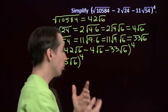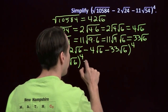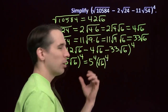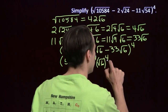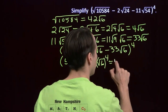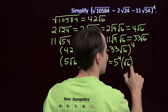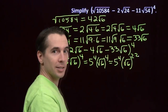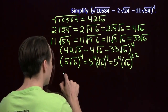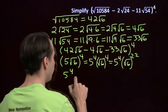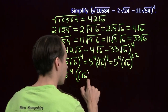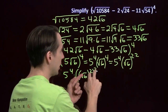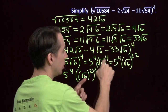Now we can raise this to the fourth power using one of our exponent rules. We have a product raised to the fourth power, which we can write as the product of fourth powers. The fourth power of a square root — we can use an exponent rule to break that down. We can write this as the square root of 6 to the 2 times 2 power. And now we can break that up into the square of the square root of 6, and then that squared again. We can write that as the square root of 6 raised to the 2 times 2, which is 4.